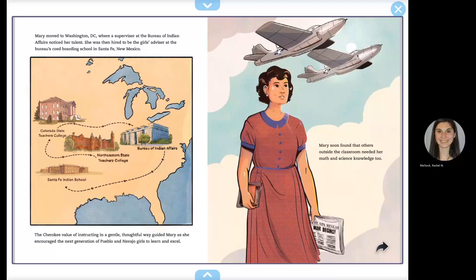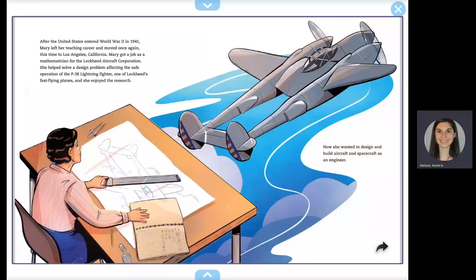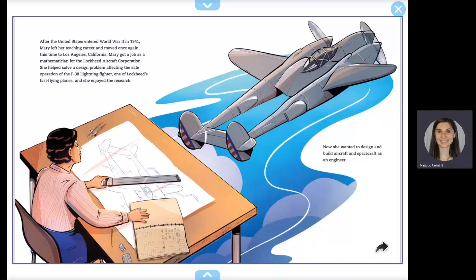Mary soon found that others outside the classroom needed her math and science knowledge too. After the United States entered World War II in 1941, Mary left her teaching career and moved once again, this time to Los Angeles, California. Mary got a job as a mathematician for the Lockheed Aircraft Corporation. She helped solve the design problem affecting the safe operation of the P-38 Lightning fighter, one of Lockheed's fast-flying planes.